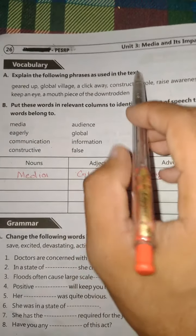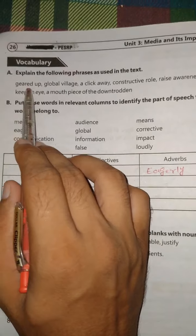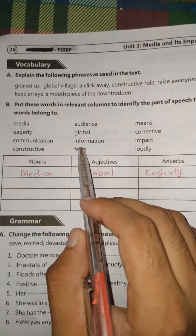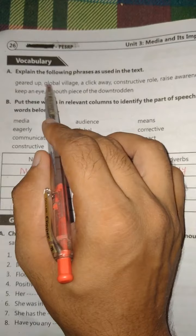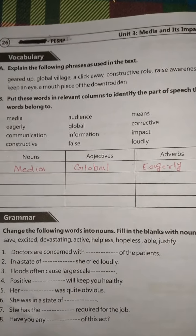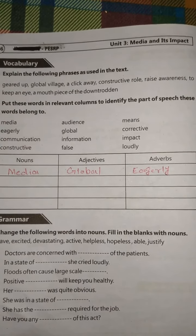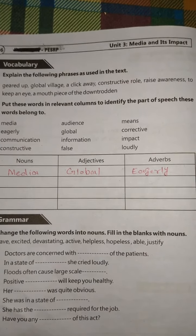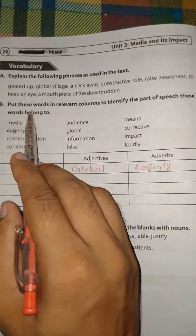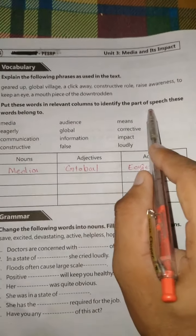Let's move to the next portion: vocabulary — explain the following phrases as used in the text. Look at the first one: 'geared up' — all the students who are geared up for discussion. 'Global village' — media has turned the world into a global village. You are supposed to do the rest of the phrases as used in the text.